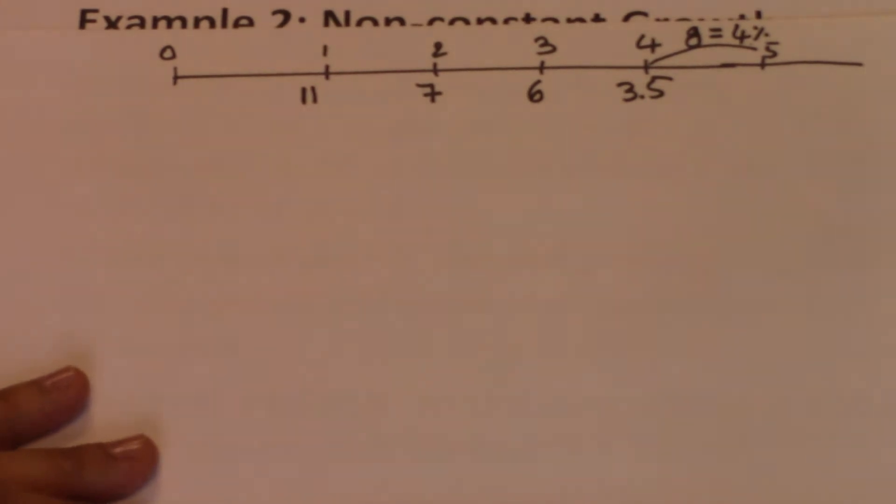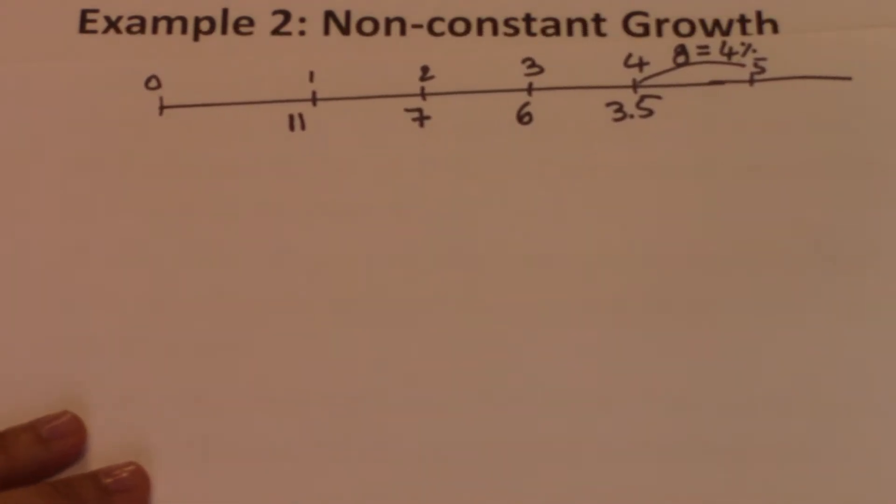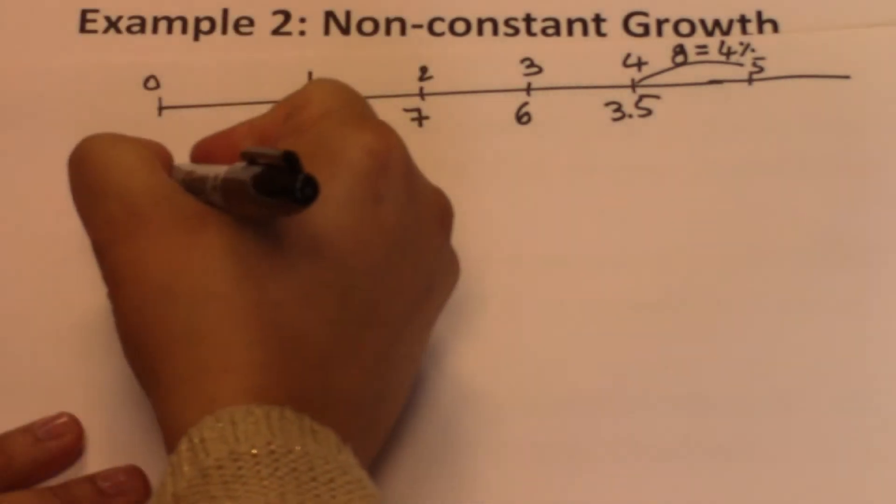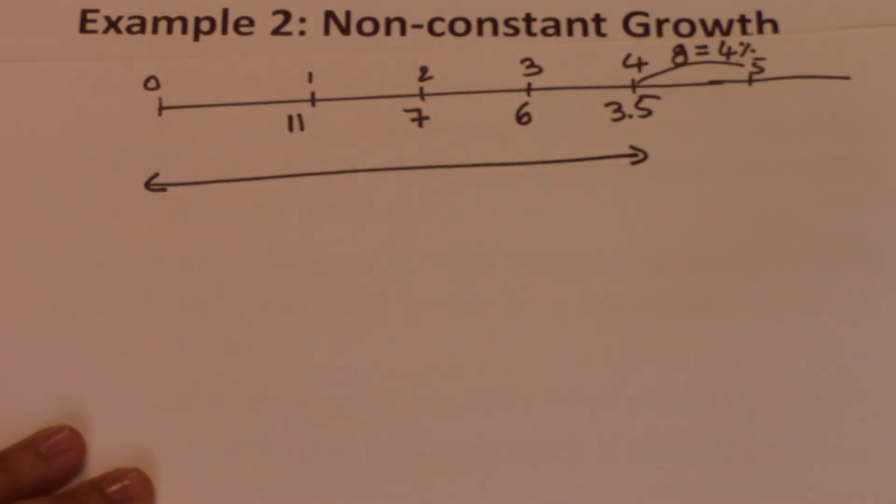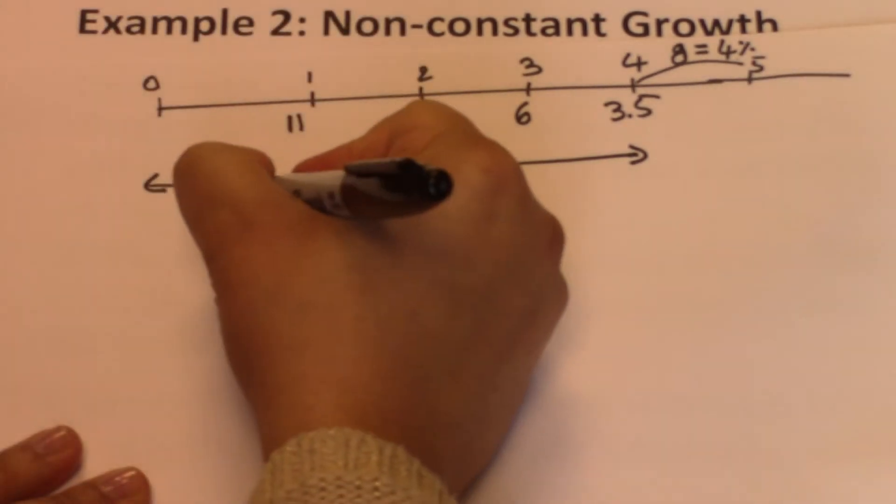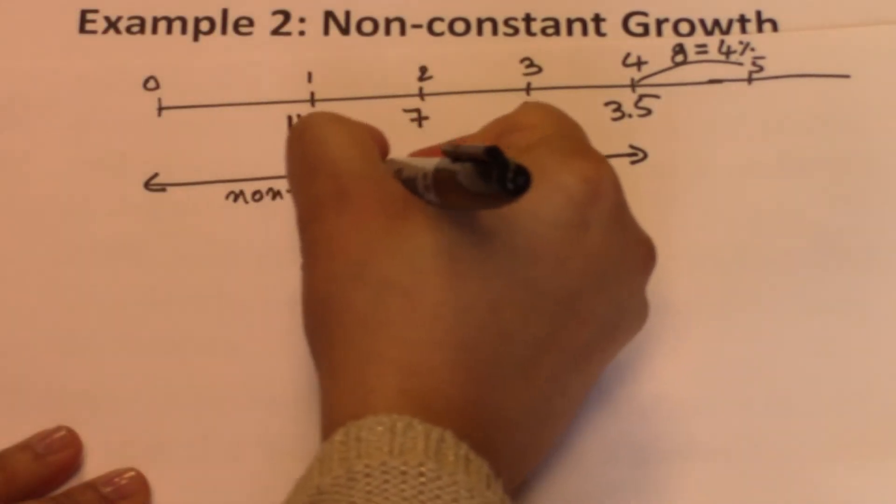Again, to visualize when the dividends become constant and where they are changing, we do this. From time 0 to year 4, to the end of year 4, we have non-constant dividends.